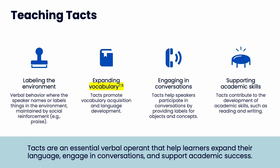You do typically have to reinforce tacts because there's no reinforcement built in. You might use cards, and if they label the cards correctly, you give them a token on a token board — they earn tokens for labeling things correctly. It's always better to use the real thing than pictures, though pictures are common in ABA because they're easier. Teaching tacts is essentially vocabulary acquisition — a major step in language development. Being able to tact starts the ability to have conversations and really supports academic skills.